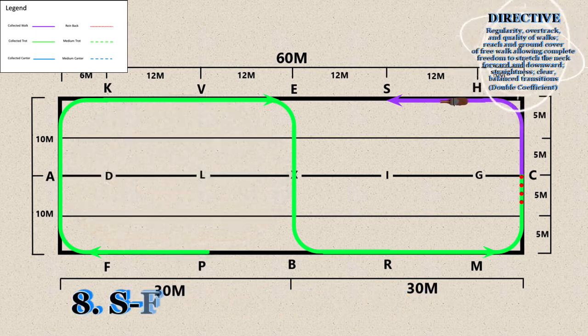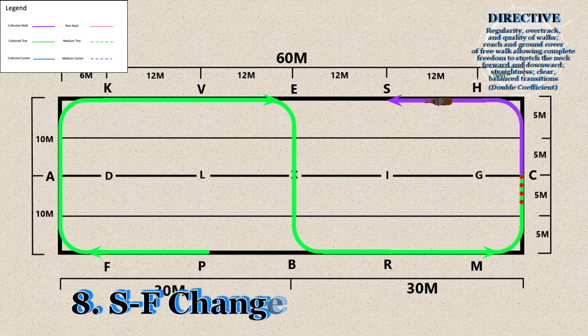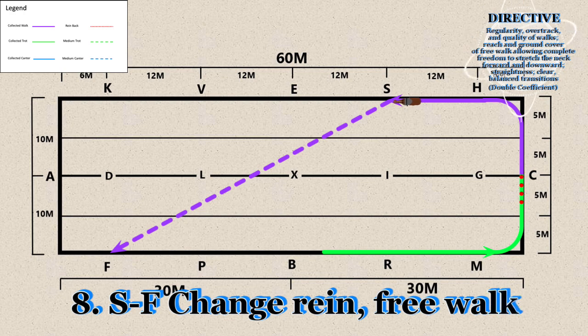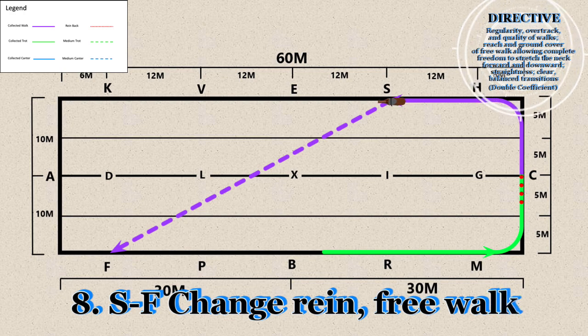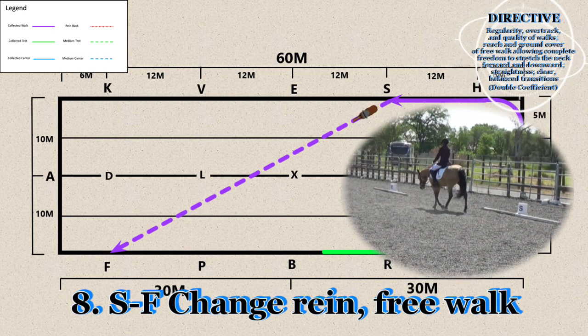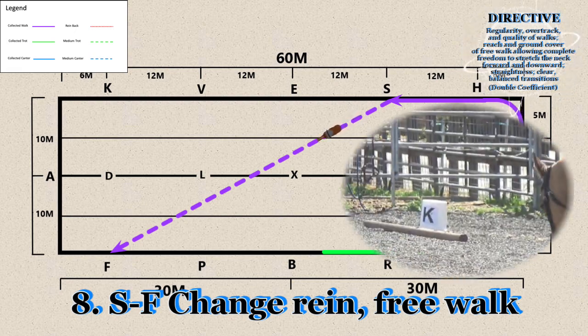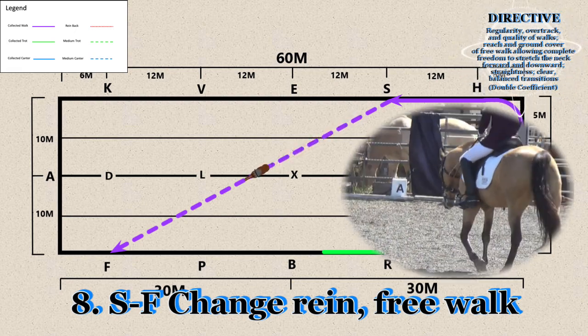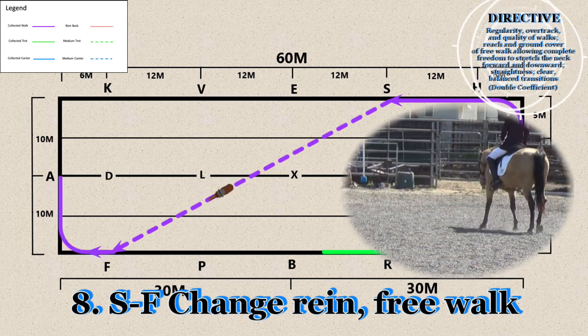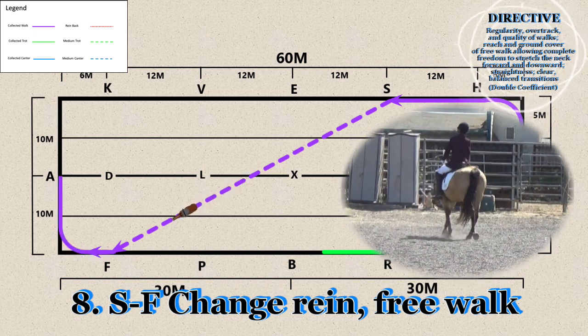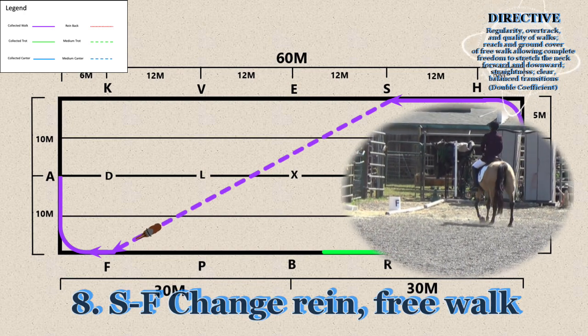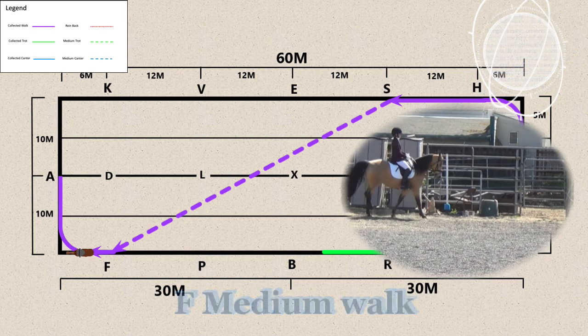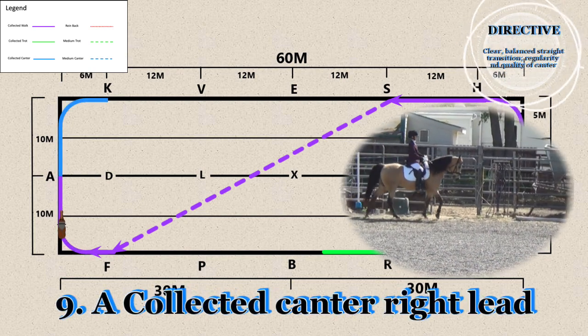8. S through F. 9. A - Collected canter.